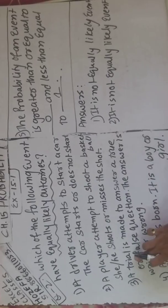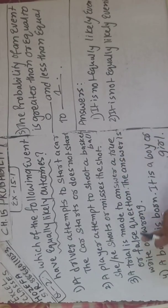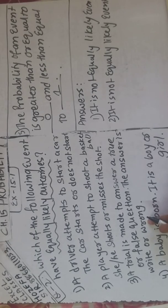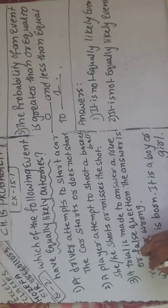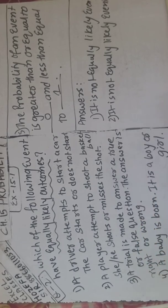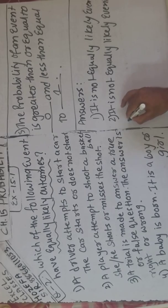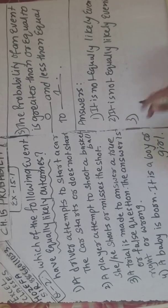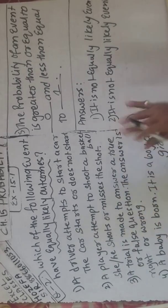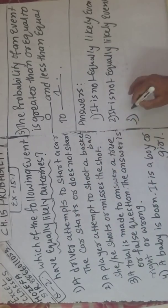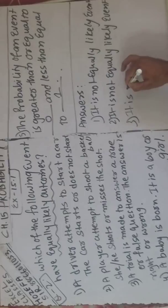Third: a trial is made to answer a true or false question — the answer is right or wrong. Right bhi ho sakta hai ya wrong — dono ke 50-50 chance hain. Jaise coin mein head or tail tha — it is an equally likely event.